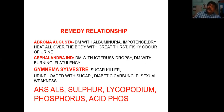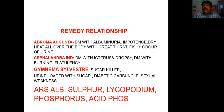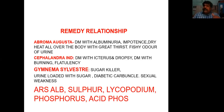The next common specific remedy is Gymnema sylvestre, which is commonly known as the sugar killer. It is basically associated with diabetic carbuncles — don't forget this. Diabetic carbuncles, and sexual weakness will be there, not impotency but sexual weakness. If you consider Abroma augusta it is impotency, but in the case of Gymnema sylvestre it is sexual weakness.